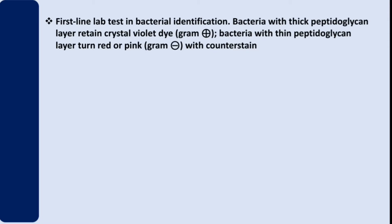Let's talk about Gram staining. Gram staining is the first-line lab test in bacterial identification. I would like to assume that you already know that there are two main groups: Gram positive bacteria and Gram negative bacteria.